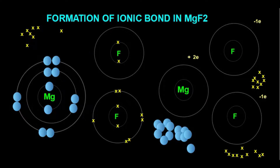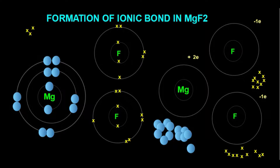Similarly, we keep 7 electrons for the second fluorine atom: 2 electrons in the K shell, and in the L shell — the valence shell — 7 electrons: 1, 2, 3, 4, 5, 6, 7. So there are 7 electrons in the valence shell of this fluorine atom as well.